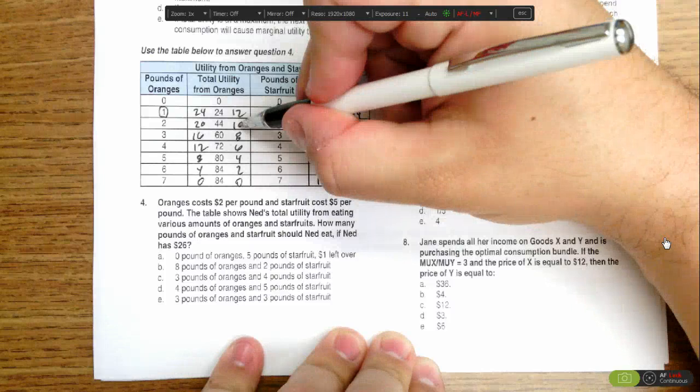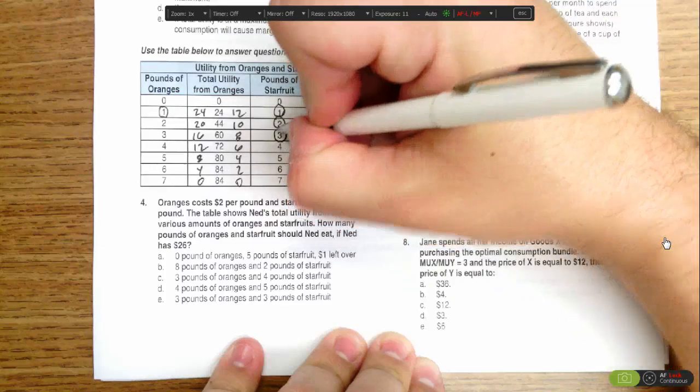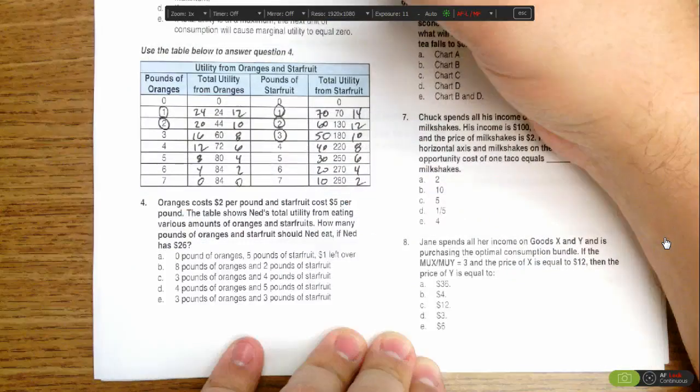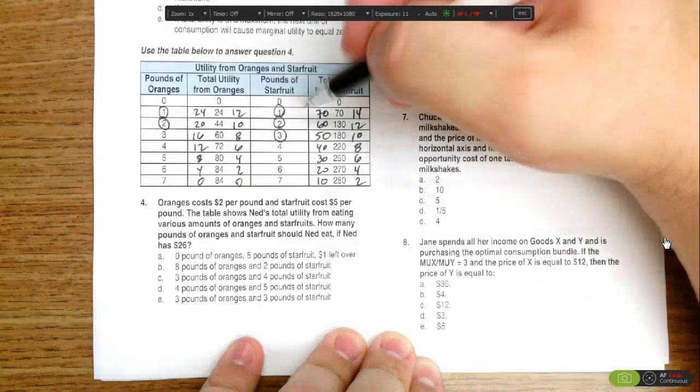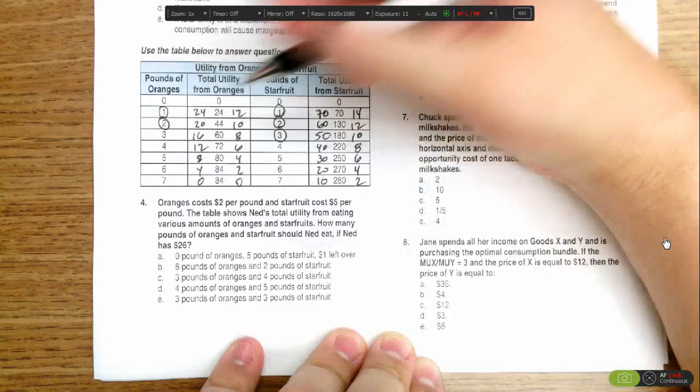Then we see that the next orange brings 10, the next star fruit brings 10 as well, so he'll buy three star fruit and the second orange. We just got to keep track of our $26. So right now he's spent $5, $10, $15, $17, $19, he's still got some more to go.